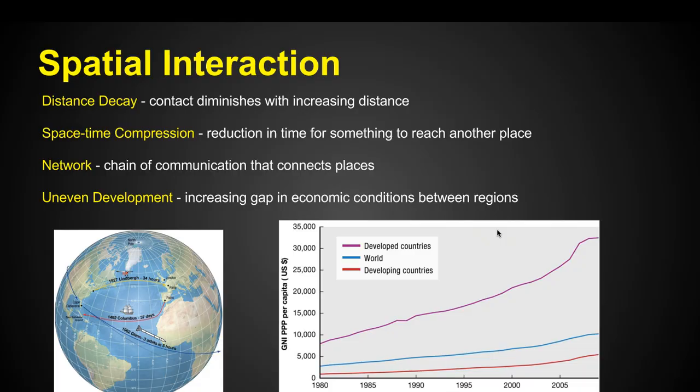We also look at spatial interaction — how things are able to connect and work with each other in spite of the space between them. One thing we see is distance decay, where contact diminishes with increasing distance. If I'm hanging out with my buddy Jordan and we live next to each other, it's easy to communicate. But if he moves to Egypt, that distance decay — because he's so far away — means perhaps we don't really communicate as much anymore. Our spatial interaction is blocked by that distance.